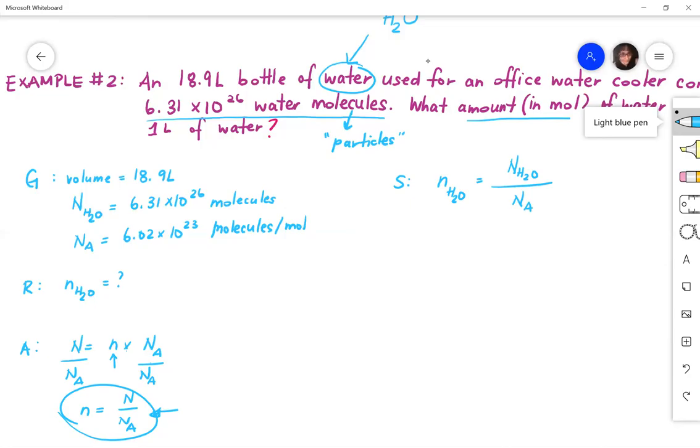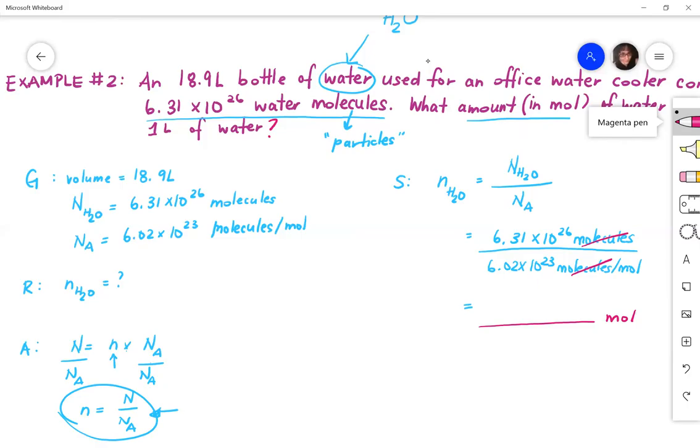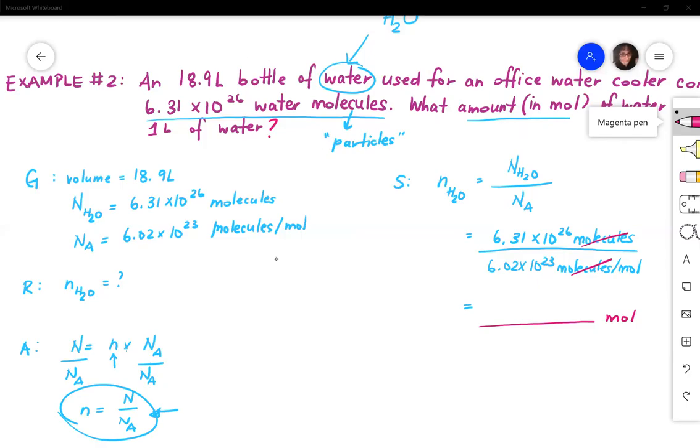Number of moles of water is equal to the molecules of water divided by Na. Plug in the numbers that you were given. So 6.31 times 10 to the 26 molecules. Divided by Avogadro's constant. Notice that molecules will cancel. And you will get your answer in moles.